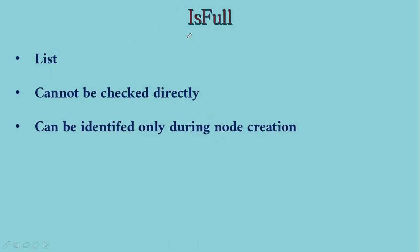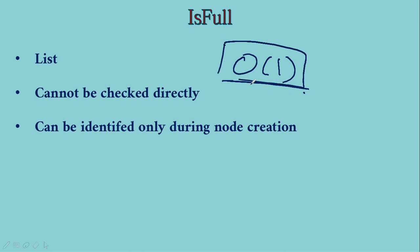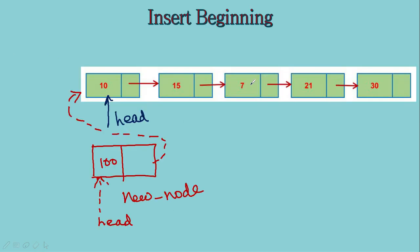Then we were talking about the isFull operation. When you look at the isFull operation, it is going to depend on the memory of the system on which we are going to run the code, because dynamically the memory is going to be allocated. How much memory will be available in the heap — based on that only your list may become full. When you are trying to dynamically allocate memory, if memory could not be allocated and the address returned is null, then we can conclude that it is full. So the time taken for checking whether the list is full is big O of 1.